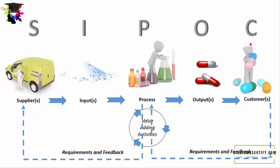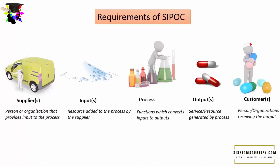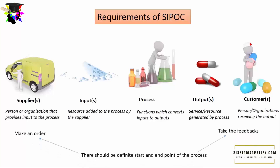So SIPOC works in a feedback loop. Now let us see some of the requirements before we draw the SIPOC matrix or SIPOC diagram. The first requirement is there should be a definite start and end point of the process. For example, the definite start may be making an order to the supplier and the end point may be taking feedback from the customers — we have a definite start and stop point of the process.